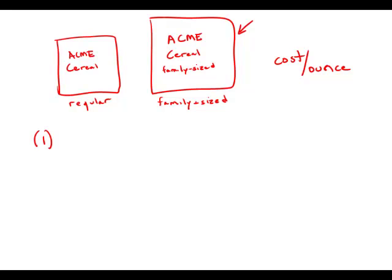Statement number one tells us the family-sized box of cereal contains 10 ounces more than the regular-sized box of cereal. So the regular one has X ounces, then the family size has X plus 10 ounces.